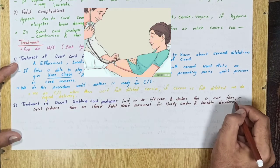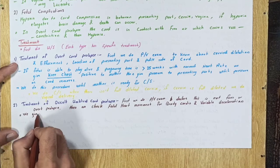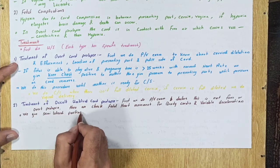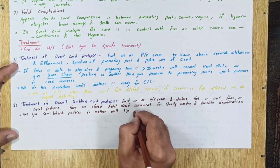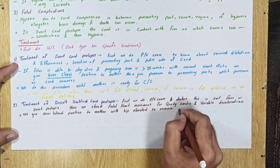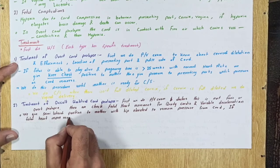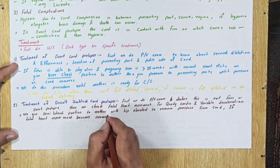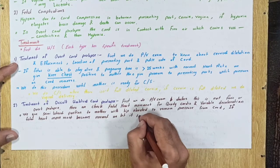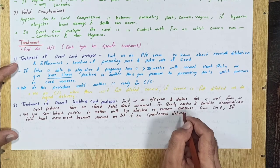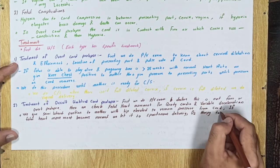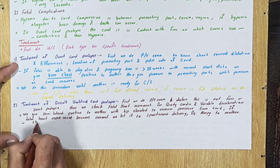We give semi-lateral position to mother with hip elevated to remove pressure from cord. If fetal heart movement becomes normal, we let it do spontaneous delivery. Oxygen therapy to mother, check constantly fetal heart movement.